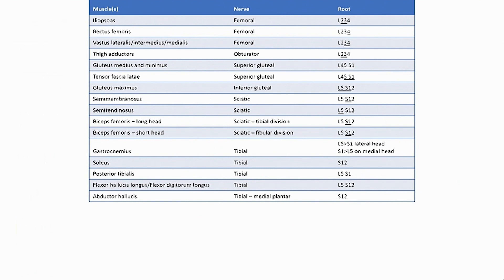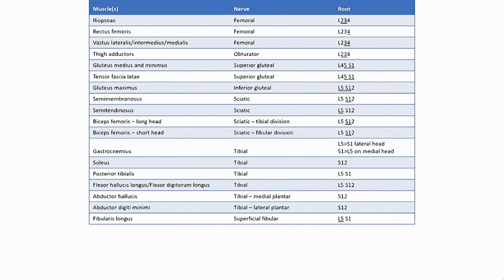The abductor halicis is supplied by the tibial nerve, medial plantar branch, S1 and S2. The abductor digiti minimi is innervated by the tibial nerve, lateral plantar branch, also S1 and S2. Fibularis longus muscle is supplied by the superficial fibular nerve, L5 and S1, primarily L5. The anterior tibialis muscle is innervated by the deep fibular nerve, L4 and L5, primarily L5.